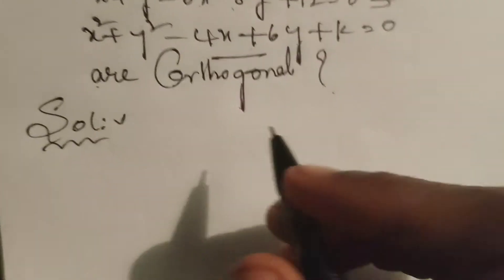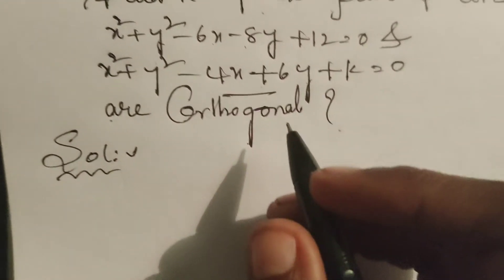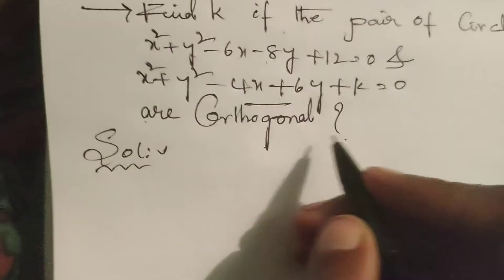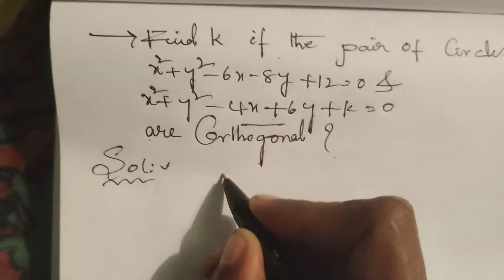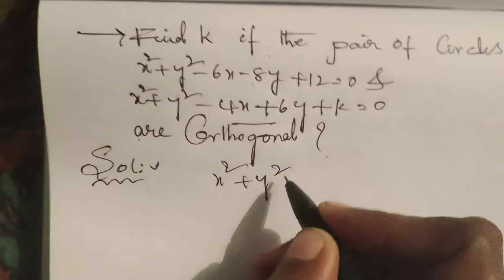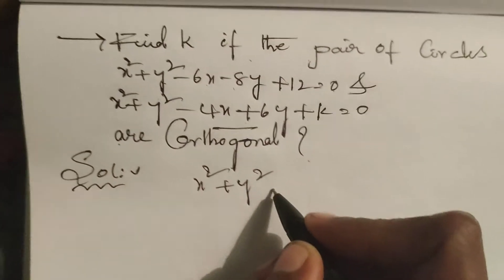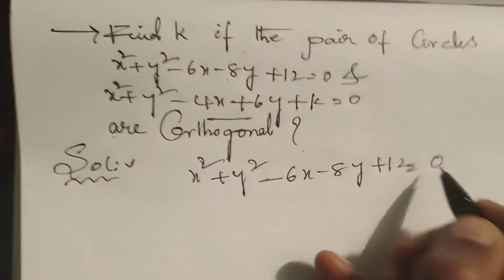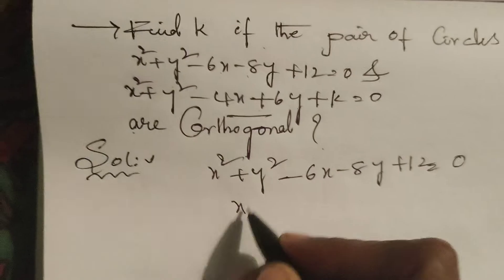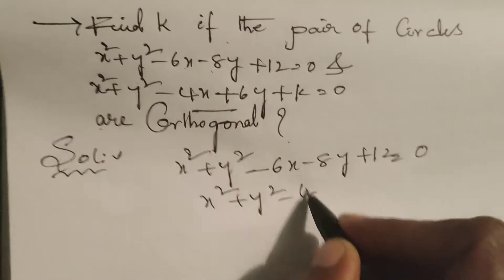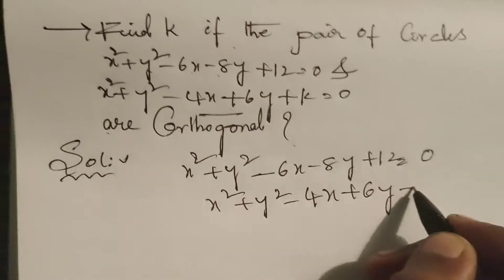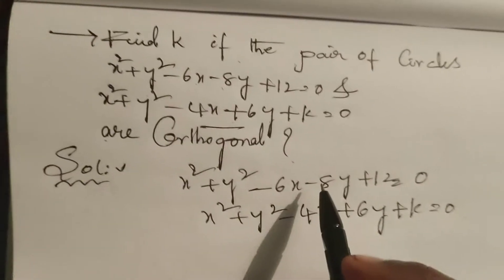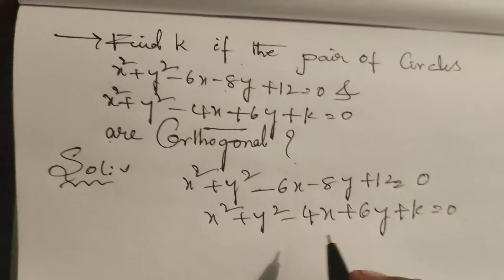Here the given circles: x² + y² - 6x - 8y + 12 = 0 and x² + y² - 4x + 6y + k = 0. The given two circles, and the given condition is that the two circles are orthogonal.